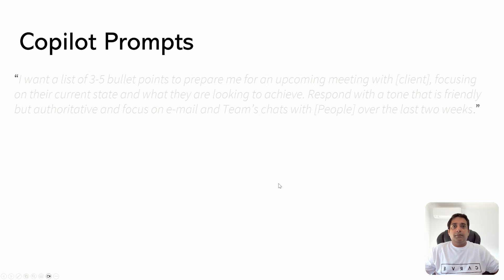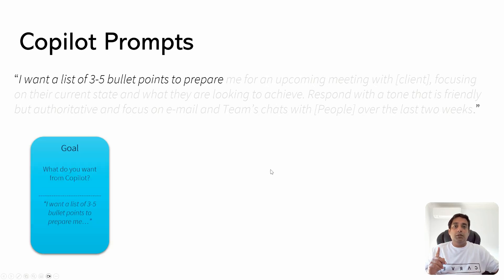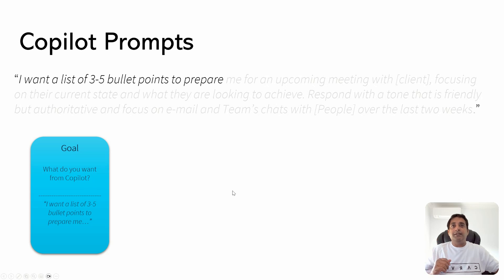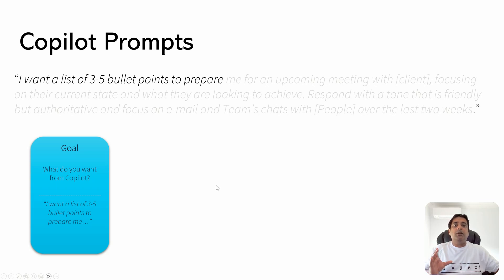Let's just break this down. The first part is the goal — what do you want from Copilot. The part that is highlighted here is 'I want a list of three to five bullet points to prepare.' So Copilot knows that this is your goal. It's just like how you will be talking to a human being when you're clear and elaborative.